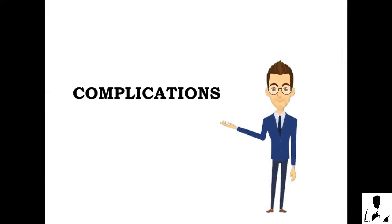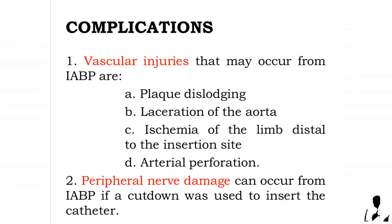Complications: one, vascular injuries that may occur from IABP include plaque dislodging, laceration of the aorta, ischemia of the limb distal to the insertion site, and arterial perforation. Two, peripheral nerve damage can occur from IABP if a cut-down was used to insert the catheter.